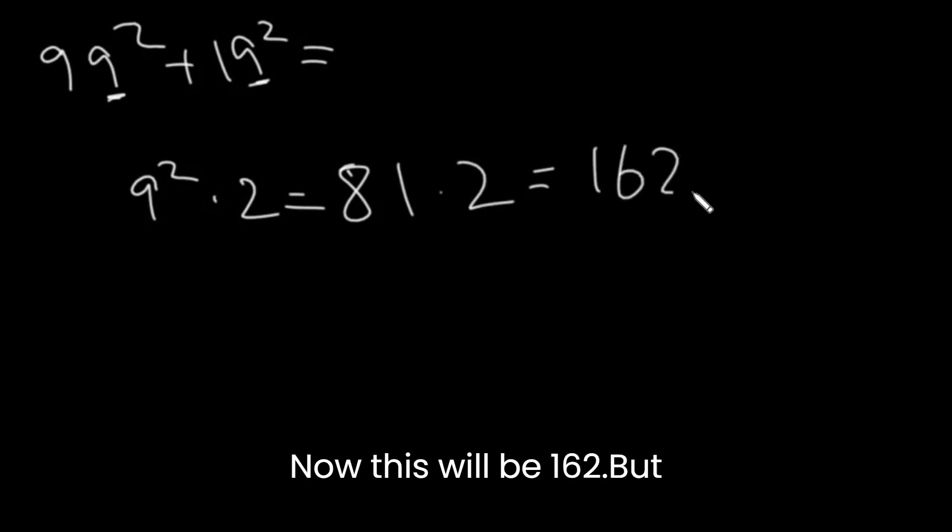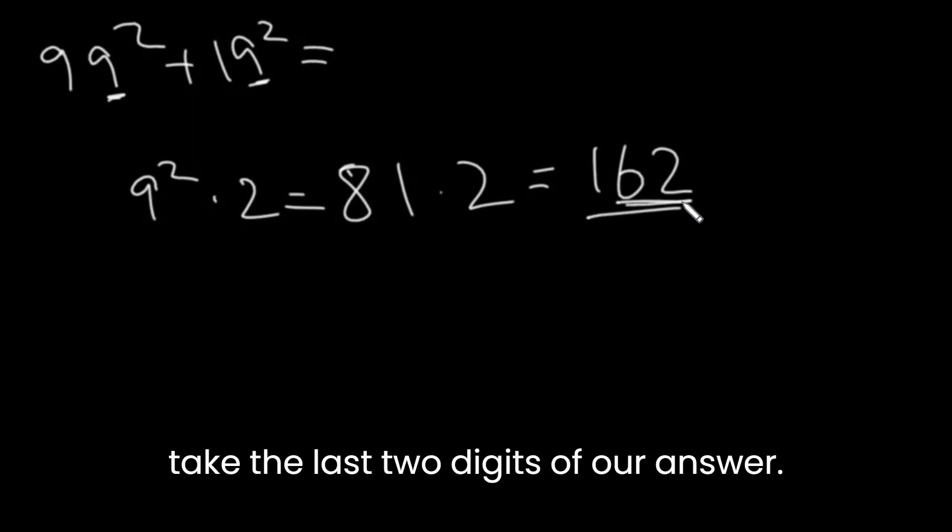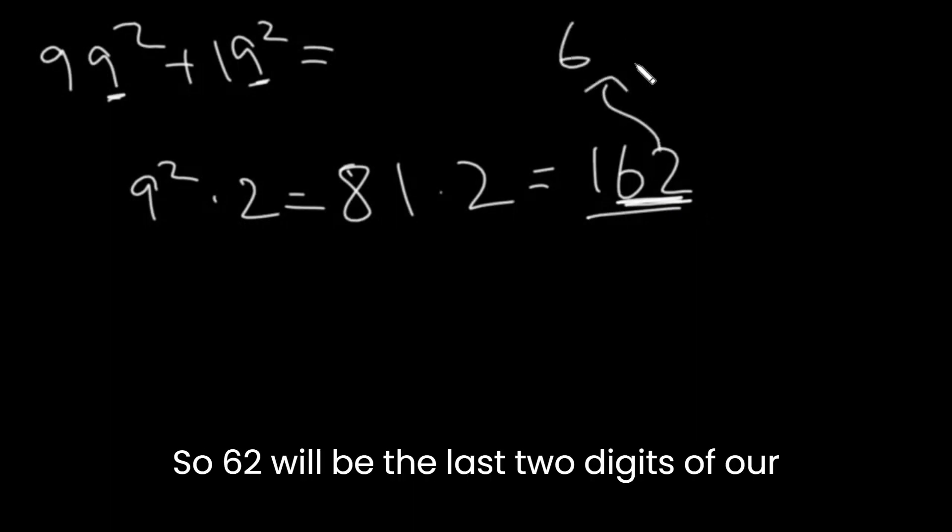Now this will be 162. But this has to be the last 2 digits. Since we have 3 digits, we're just going to take the last 2 digits of our answer. So 62 will be the last 2 digits of our final answer.